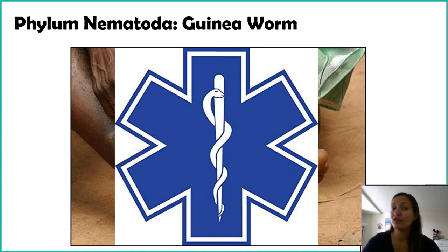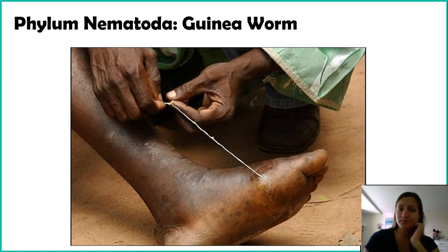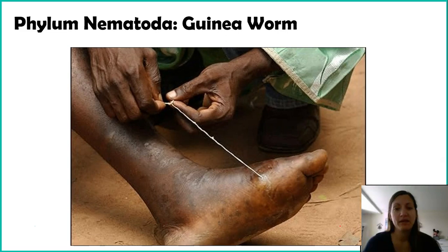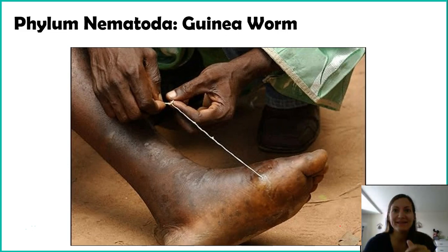For those willing to see it — here is someone's foot with all the swelling, and here is the female being literally pulled out of the person. That right there is probably about six inches of worm, and there's probably a whole lot more. One person has a small stick in their hand, just winding it up. This is essentially the treatment of guinea worm.